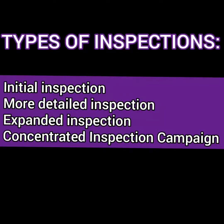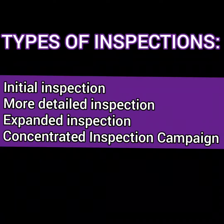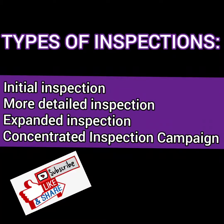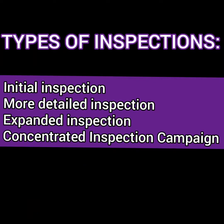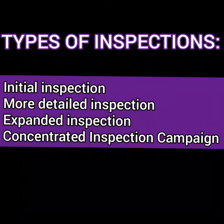Now let's go through the types of inspection that may be carried out by port state control. There are four types: initial inspection, more detailed inspection, expanded inspection, and concentrated inspection campaign.